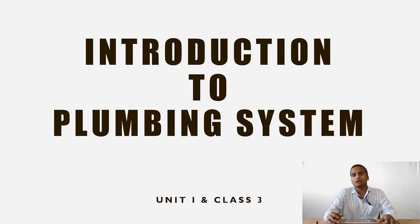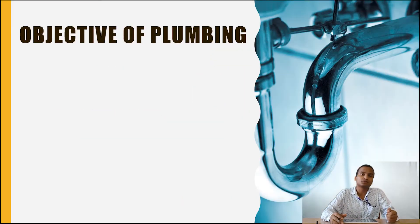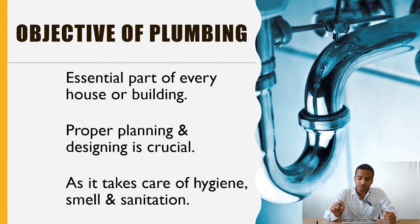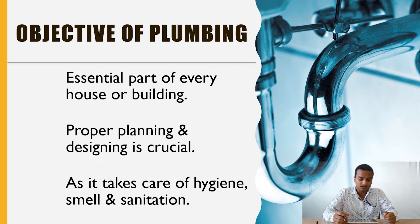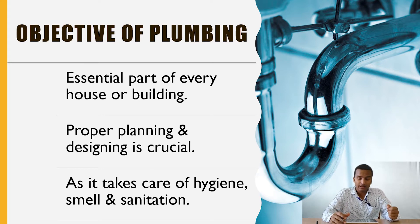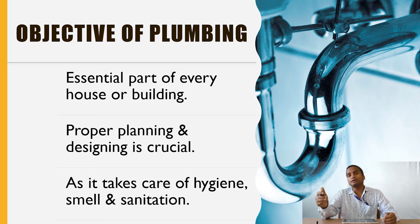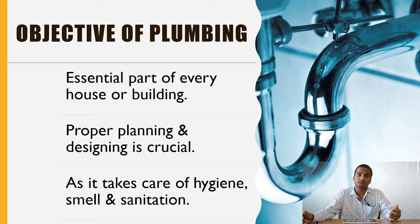This is unit one in class third. The objectives of plumbing — why we go for it and why it is so important. Plumbing is one of the essential parts of every house or building because it takes care of hygiene, cleanliness, aesthetics, smell, environment as well as sanitation. Knowledge of plumbing is very important and if one has a good command over the subject, only then we can go for proper planning and design of the plumbing system.